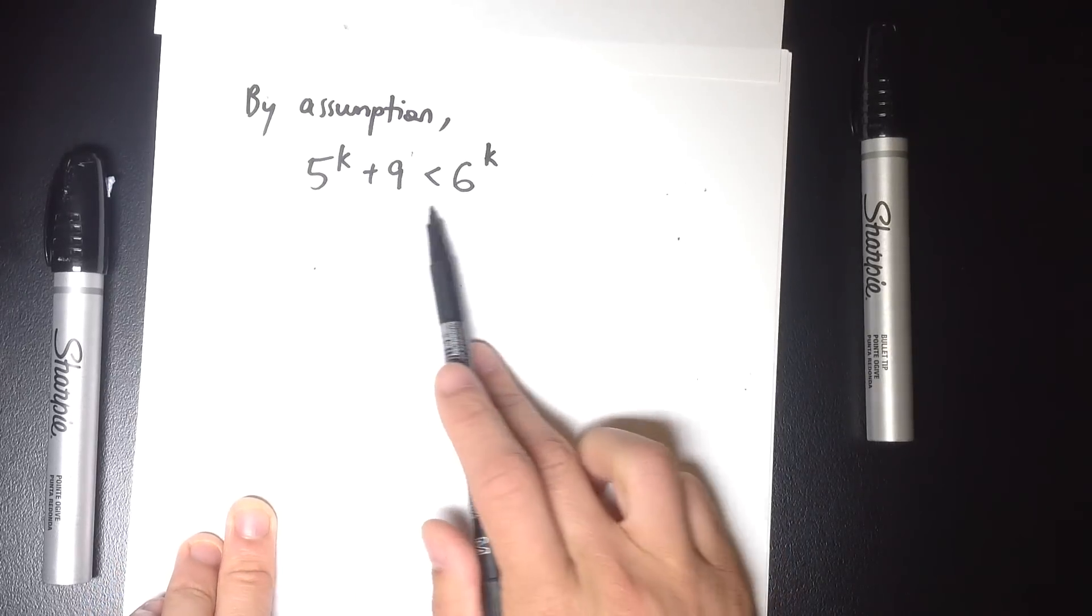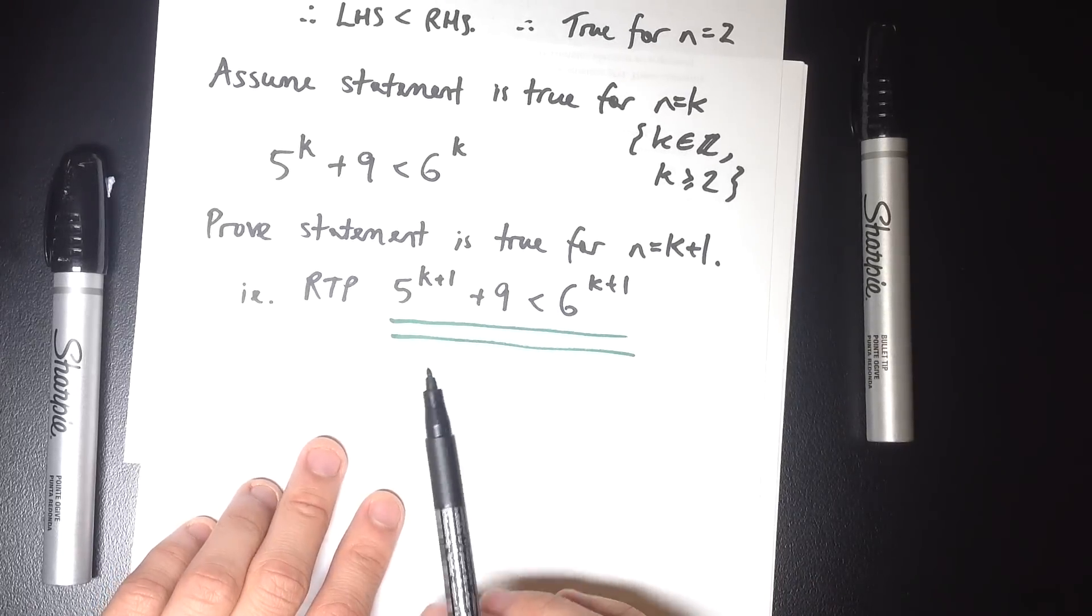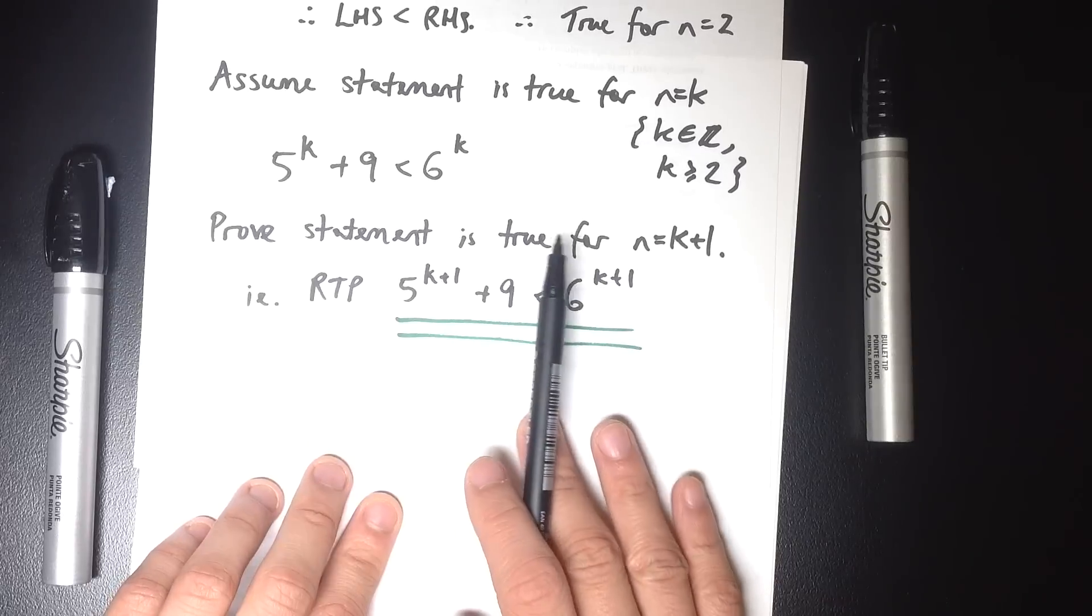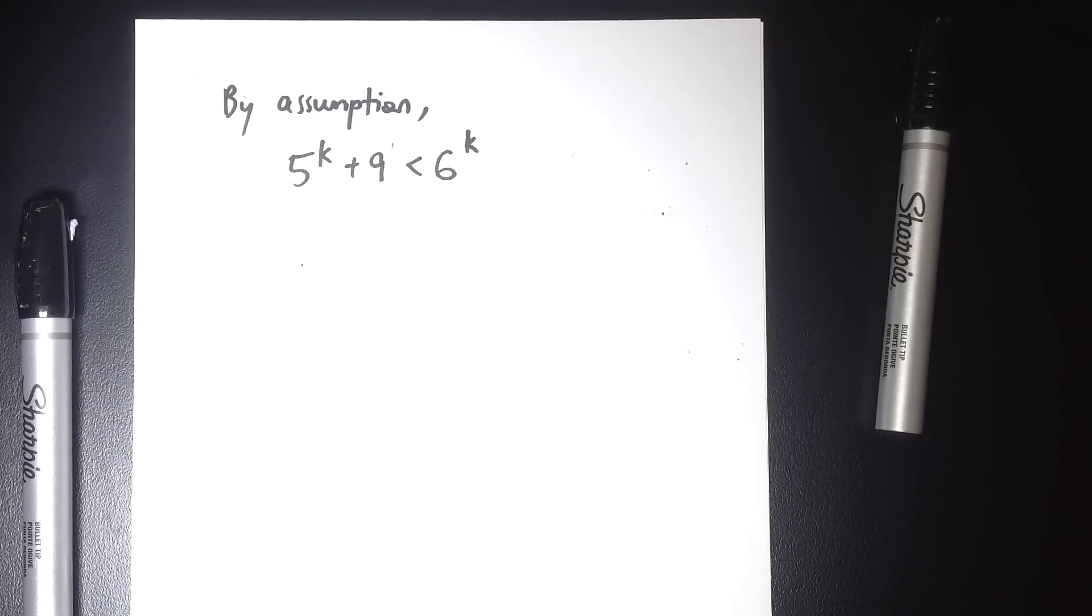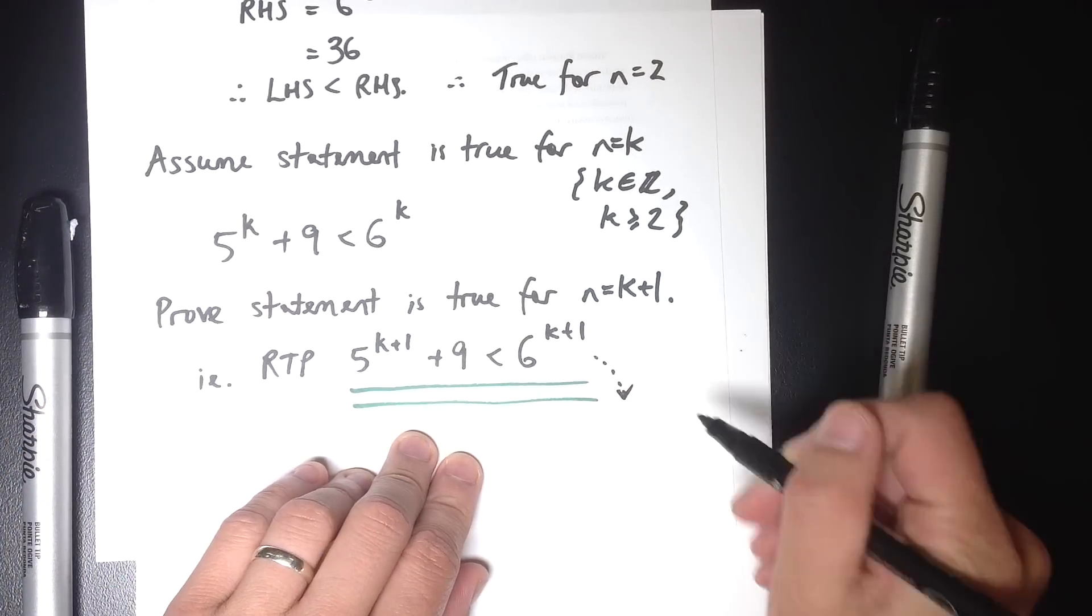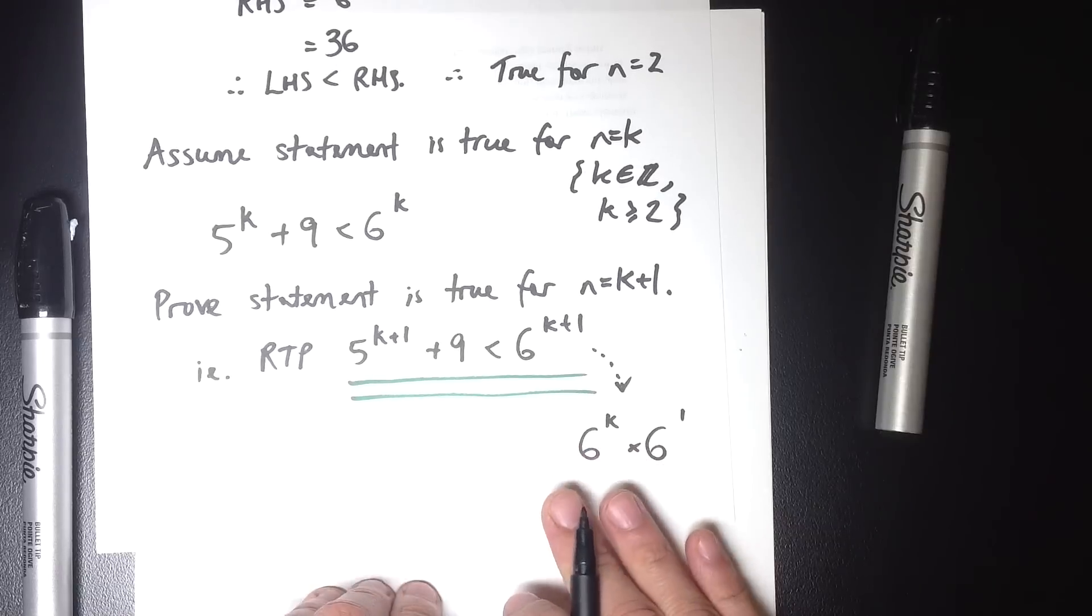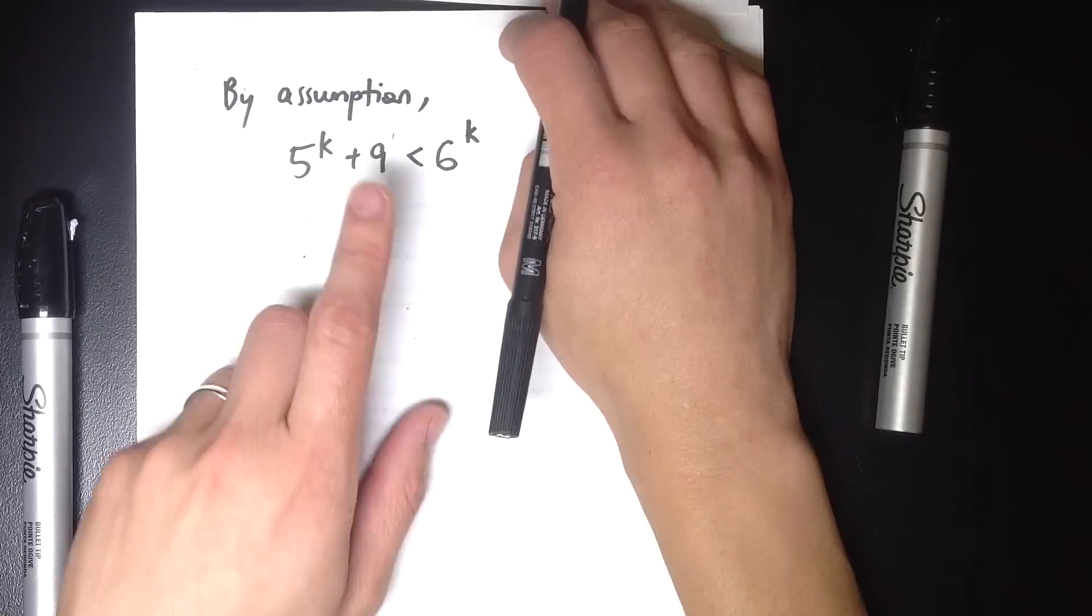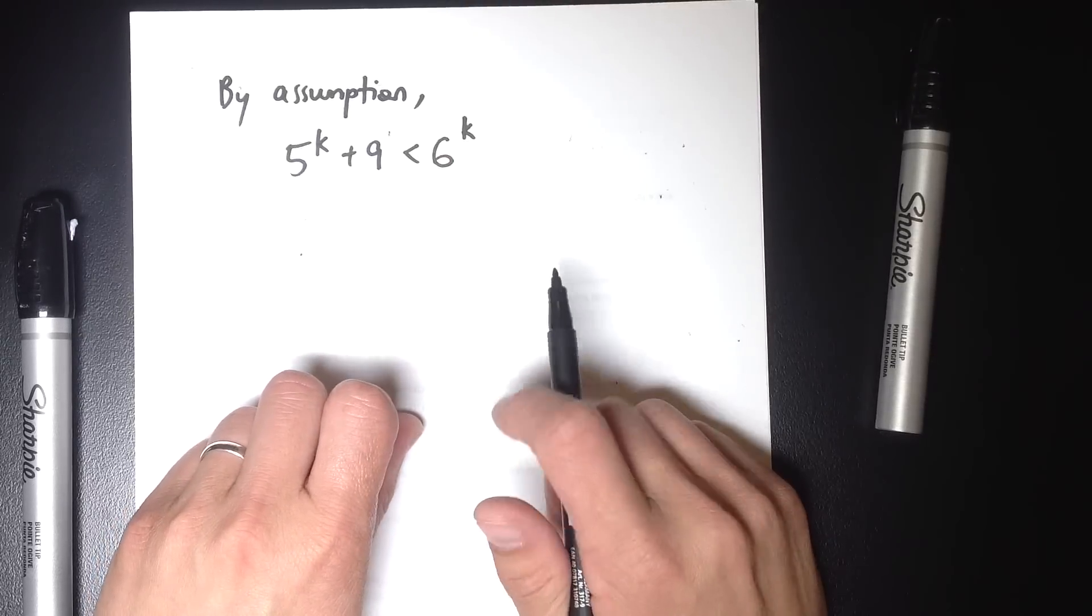Now, what can I do with this in order to make it look as close as possible to what I'm trying to prove? Well, it looks to me like the simplest difference is that on the right hand side, I've got a 6 to the k plus 1 here, that's what I'm trying to get to, and here I have 6 to the k. The difference is just a factor of 6. And to see that, you've just got to remember your index laws, that 6 to the k plus 1 is really a way of writing 6 to the k multiplied by 6 to the 1, which of course is just 6. So for me, the quickest way to start making this look like what I'm required to prove is just to multiply everything through by 6.